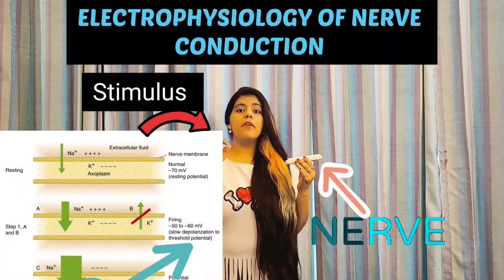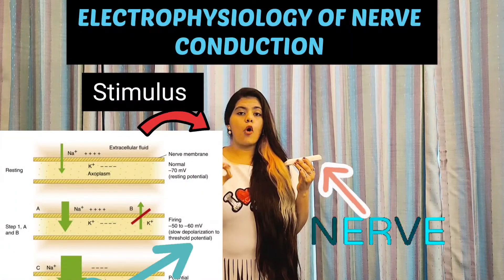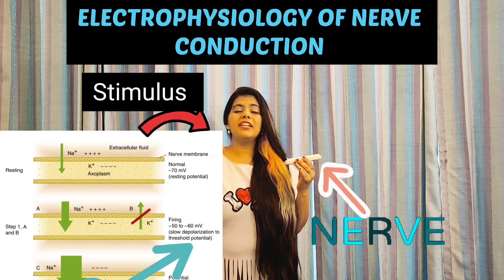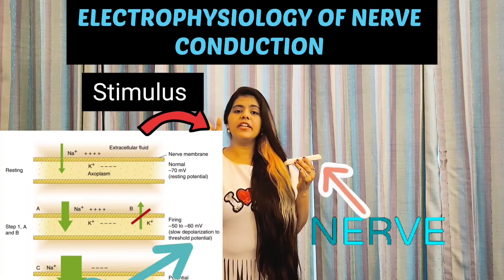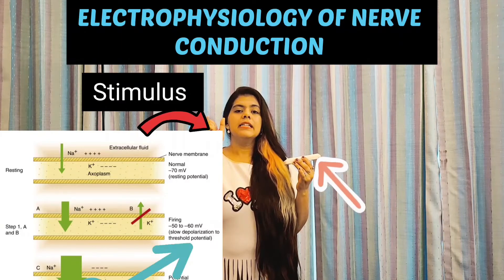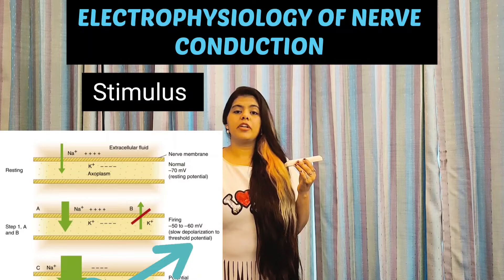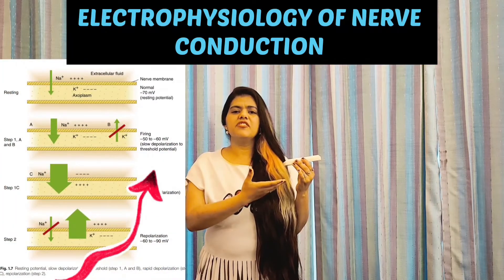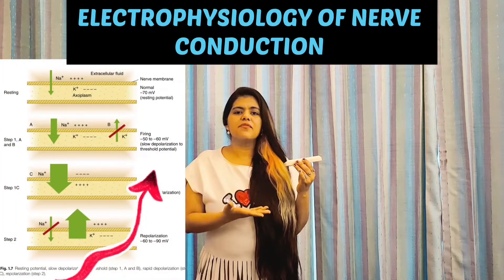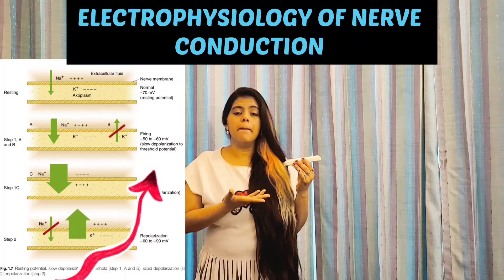The second step is when there is a drastic fall — a rapid depolarization — at a critical level. This is known as the threshold potential or firing potential, which is reached at around -50 mV to -60 mV.